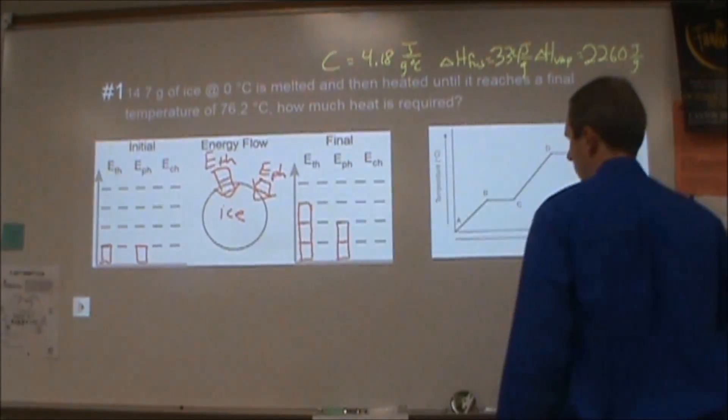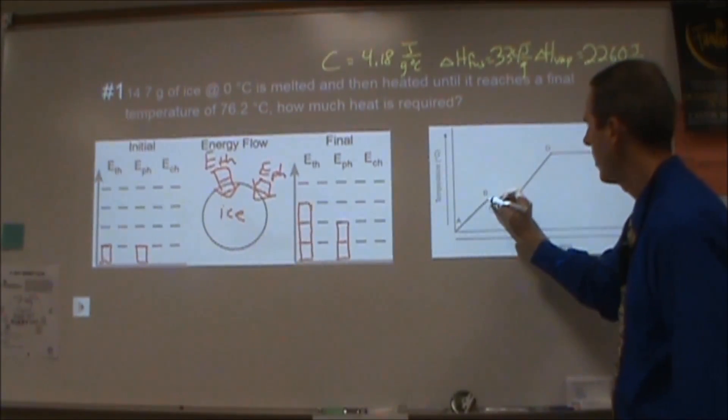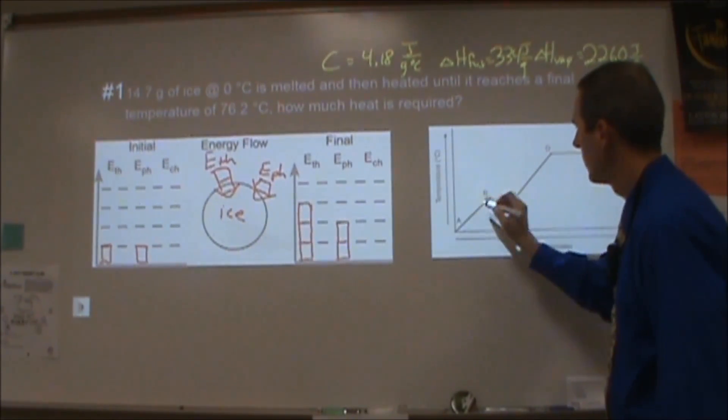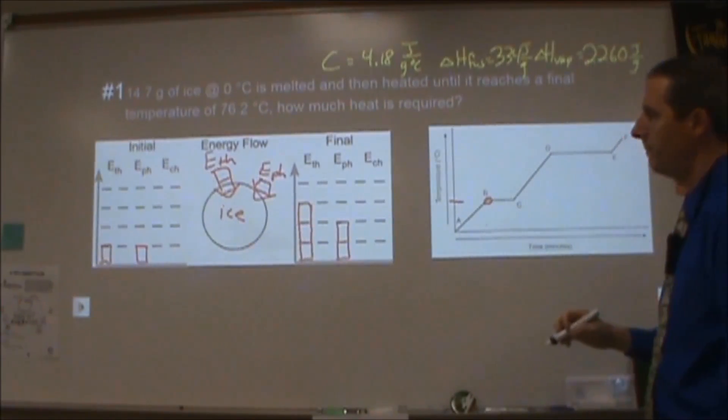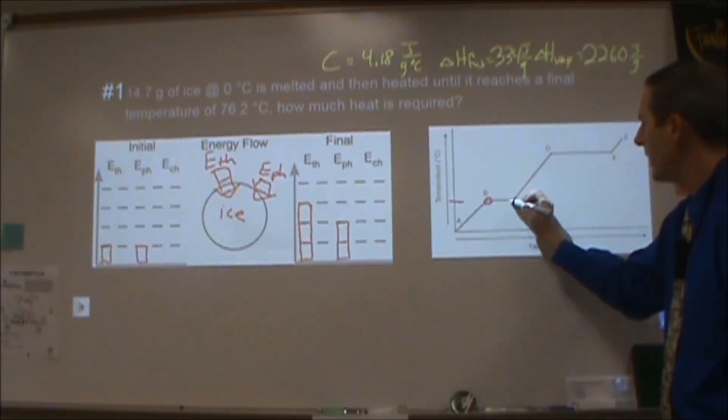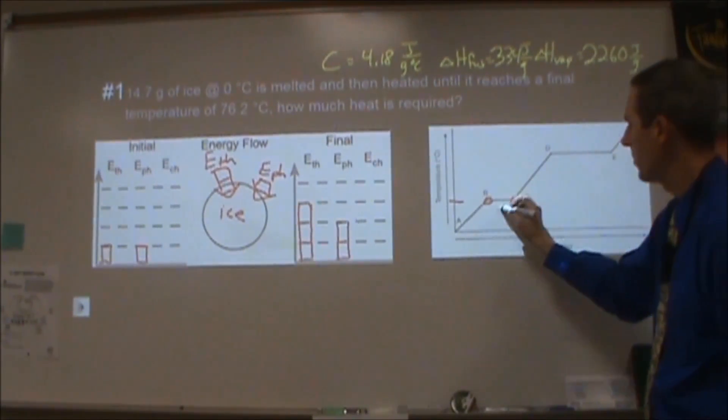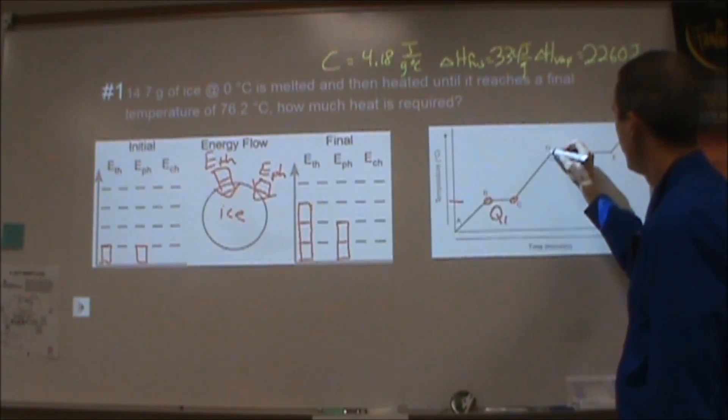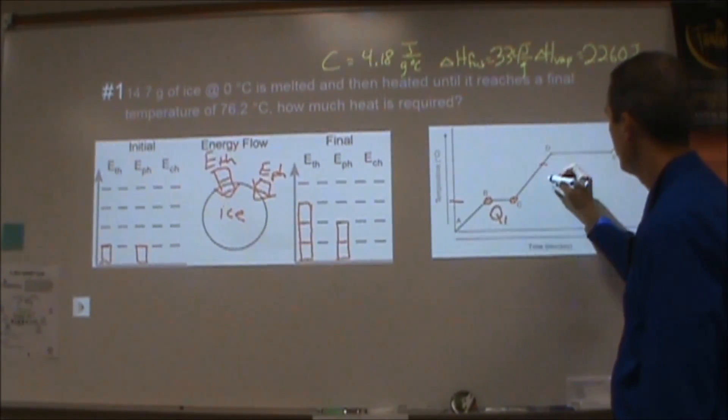If I were to mark on my heating curve where I'm starting and ending, I am starting with all ice at zero degrees, so here's my zero degree mark. I then melt all of that ice, that's going to be one calculation, we'll call that Q1, and then I heat it up until I get to about 76.2 degrees. So from here to here is my second Q.